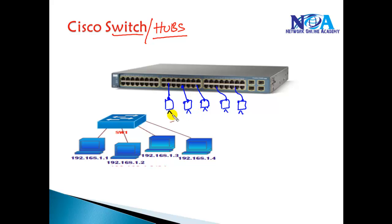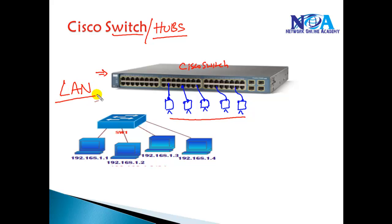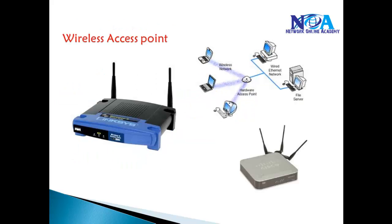In a large network, we cannot connect computers directly to each other — we need to connect everything to a centralized device. We'll be using some Cisco switches and will cover them in more detail later, but here we're just getting a basic introduction to what these devices are and what they do. When talking about a LAN, the switch is a very important device. Without a switch or hub, we cannot build a LAN. For four to five or more computers, a switch is mandatory in any company network.